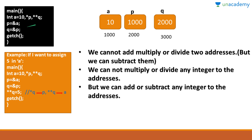p is of level 1 so it can store the address of a, as a is of level 0. We cannot add, multiply, or divide two addresses, but we can subtract them. We cannot multiply or divide any integer to an address, but we can add or subtract any integer to an address.